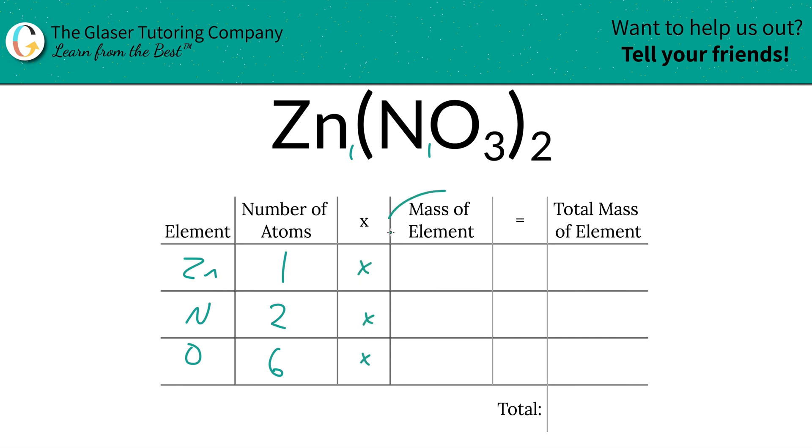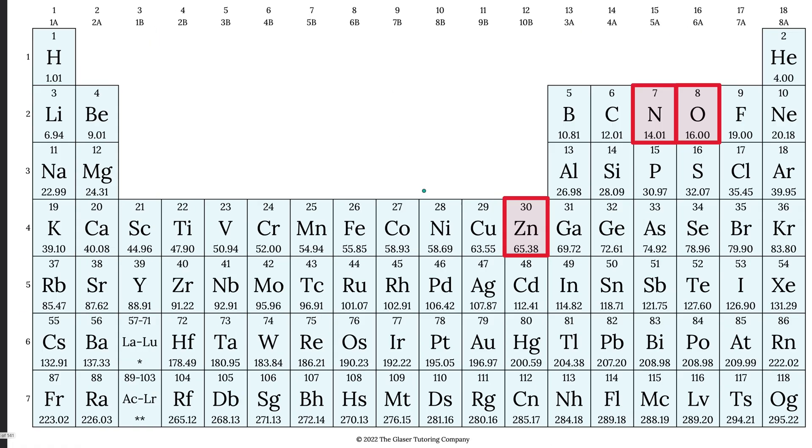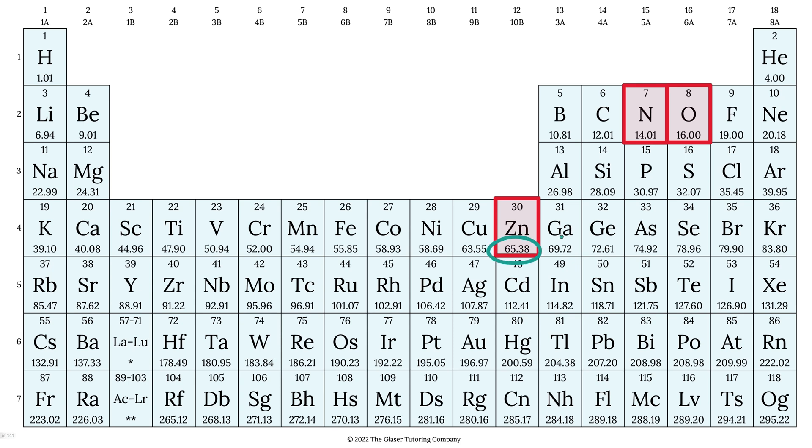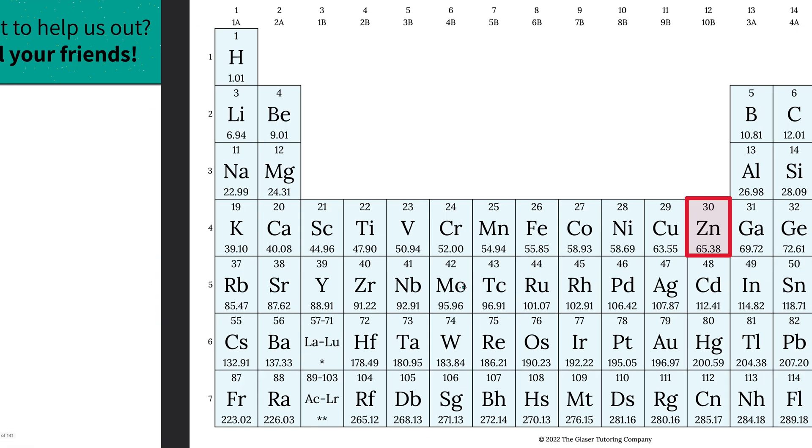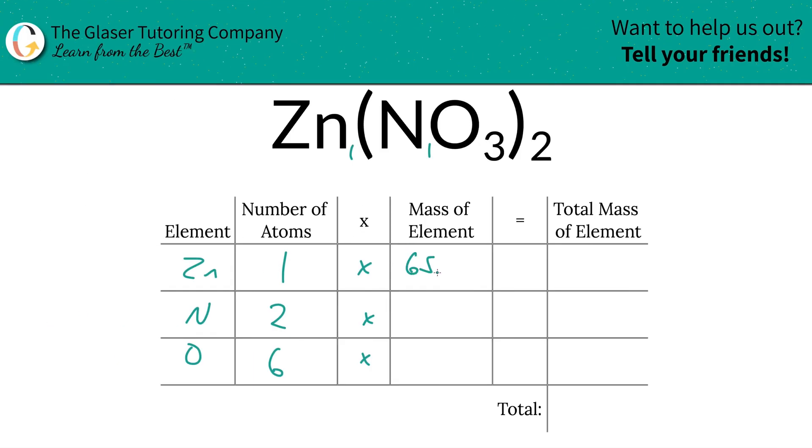Then you're simply going to take those number of atoms and multiply it by the mass of each. These masses are always found on the periodic table. So zinc's mass is going to be 65.38, nitrogen is 14.01, and oxygen is 16. So let's write them down. 65.38 for zinc, nitrogen is 14.01, and oxygen is going to be 16.